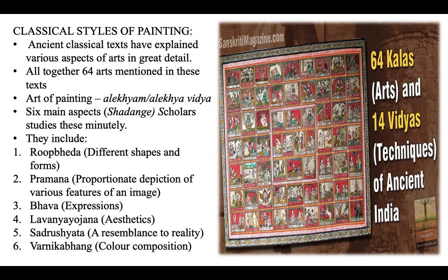Moving to classical styles of painting — ancient Indian texts have explained various aspects of art in great detail, with altogether 64 arts mentioned in these texts. The art of painting is mentioned as Alekhya or Alekhya Vidya and is said to have six main aspects, known as Shadange. The ancient Indian scholars studied these six aspects very minutely.